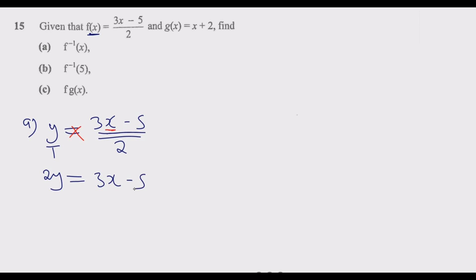The next step now is we make x the subject of the formula. So what this tells me is -5 crosses the equal sign, so it comes this side then becomes a positive. So we have 2y + 5 = 3x. We divide by 3, so this and this cancels, and we end up with x.